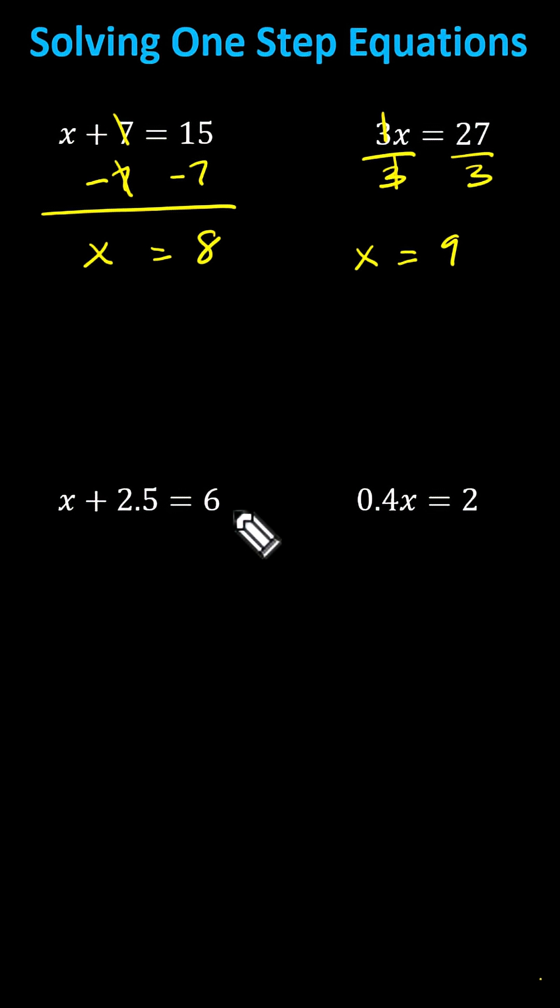We need to subtract 2.5 on both sides. Because we'll be subtracting a decimal, let's write six on the right as 6.0. And then again, we subtract 2.5 on both sides, lining up the place values and decimal point. And now we simplify. 2.5 minus 2.5 is zero. We have x equals,